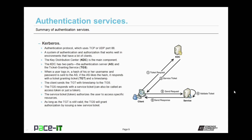When a user logs in, a hash of their username and password is sent to the authentication server. If the AS likes the hash, it responds with a ticket granting ticket, or TGT, and a timestamp. The client then sends the TGT with the timestamp to the ticket granting service. The TGS responds with a service ticket, which can also be called an access token, or just a token. The service ticket authorizes the user to access specific resources. As long as the ticket granting ticket is still valid, the TGS will grant authorization by issuing a new service ticket.